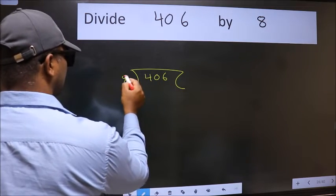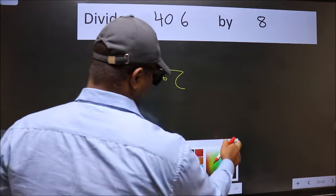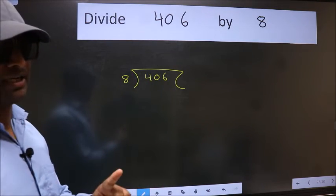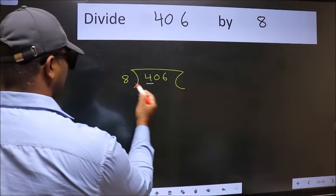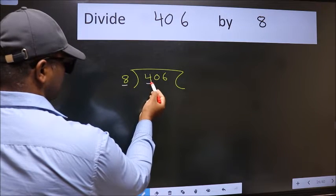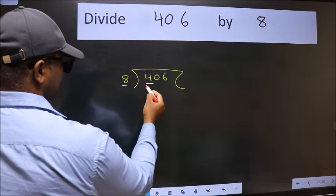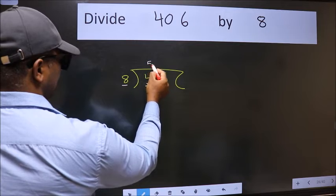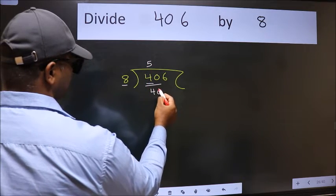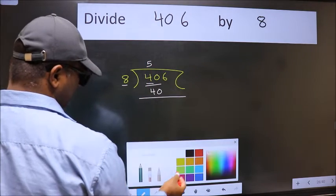This is your step 1. Next, here we have 4 and here 8. 4 is smaller than 8, so take two numbers: 40. When do we get 40 in 8 table? 8 fives 40. Now we should subtract. We get 0.